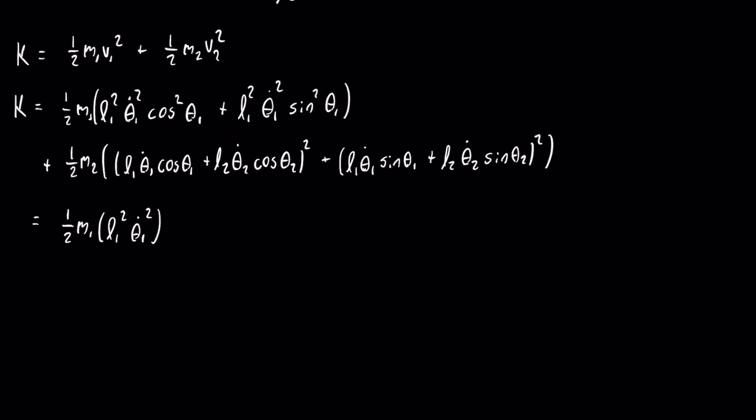For the second term, before simplifying, we need to expand everything, so we need to expand those two binomials. Squaring a binomial A plus B is equal to A squared plus 2AB plus B squared. In order to make the simplifying process easier, I'm just going to put the squared terms first and then all of the mixed terms at the end.